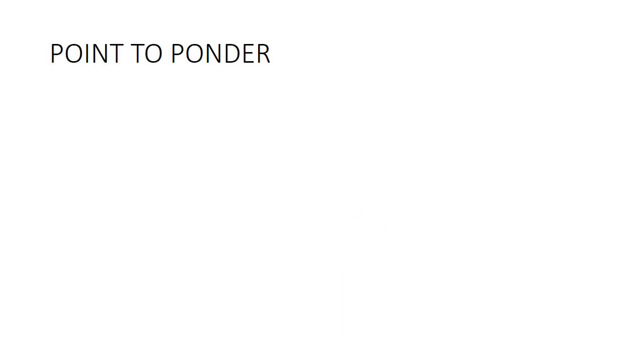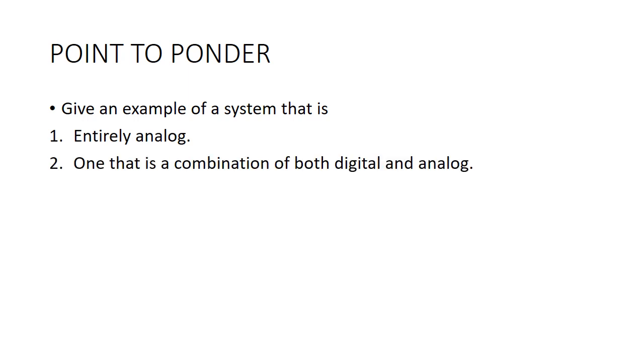We have some points which we have to think about. We should think of an example in our daily life which is entirely analog. There should be a system around us which is both digital and analog at the same time. Third, there is definitely a system which is entirely digital. This is for you and I'm waiting for your comments. You will search a system which is completely analog and answer me in the comments.